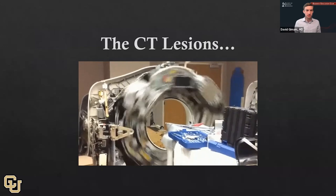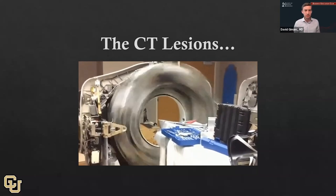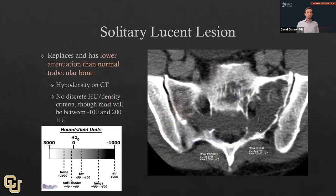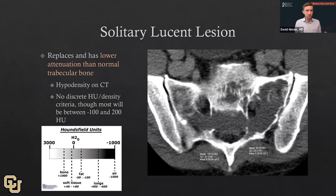We'll start with CT lesions and the solitary lucent lesion. I use 'lucent' rather than 'lytic' — I view lytic as a more aggressive way to say what I think lucent is: a lesion with lower attenuation than normal trabecular bone. Here in the sacrum, we see a lucent lesion crossing transversely with an ROI measuring about 20 Hounsfield units, compared to normal trabecular bone at about 115. These are hypodense lesions. The paper doesn't describe discrete Hounsfield unit criteria, but most of these lesions will fall between negative 100 and positive 200 Hounsfield units — that's fat density and some soft tissue and fluid densities.